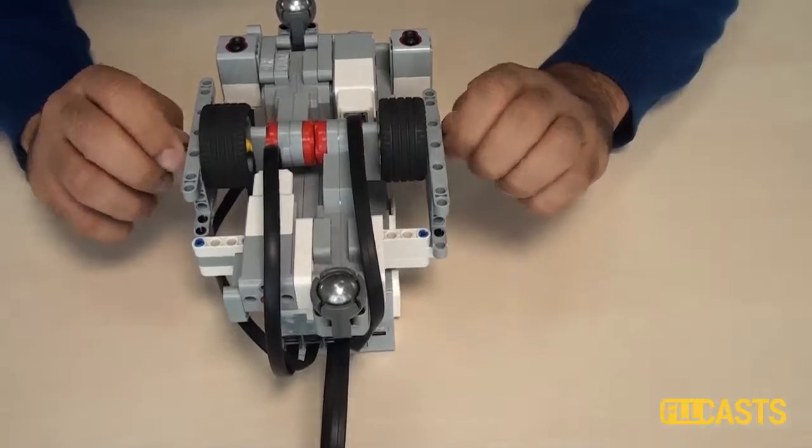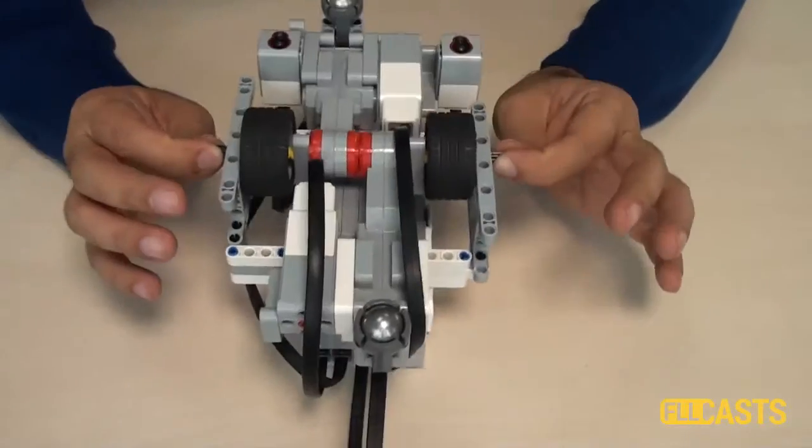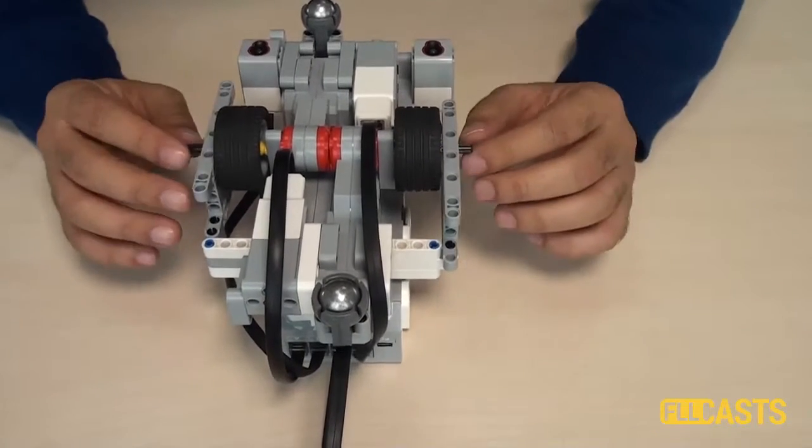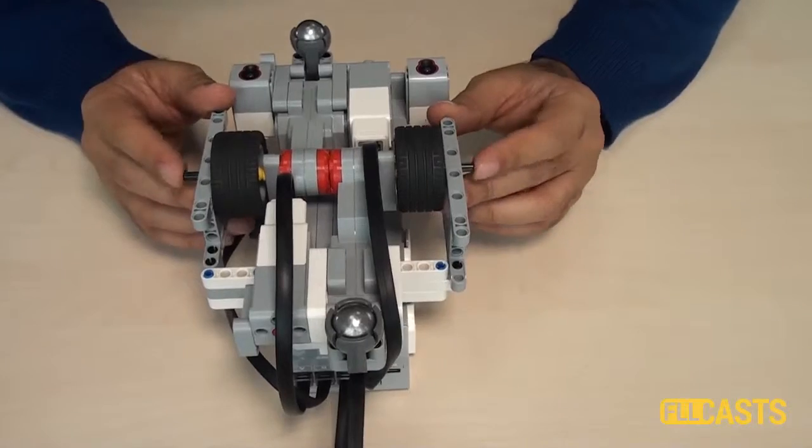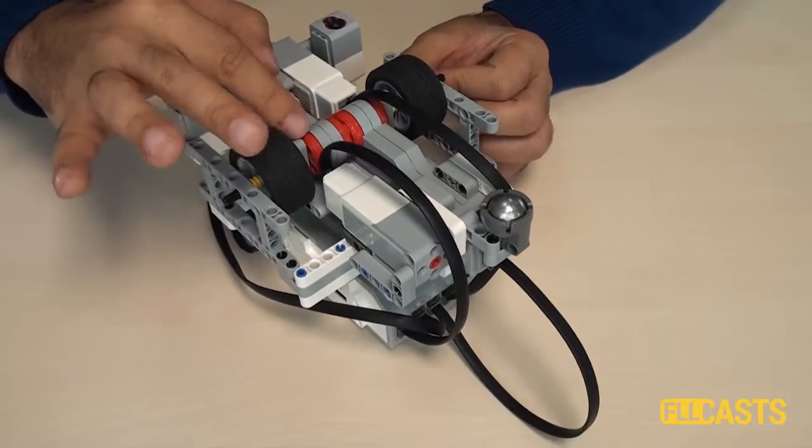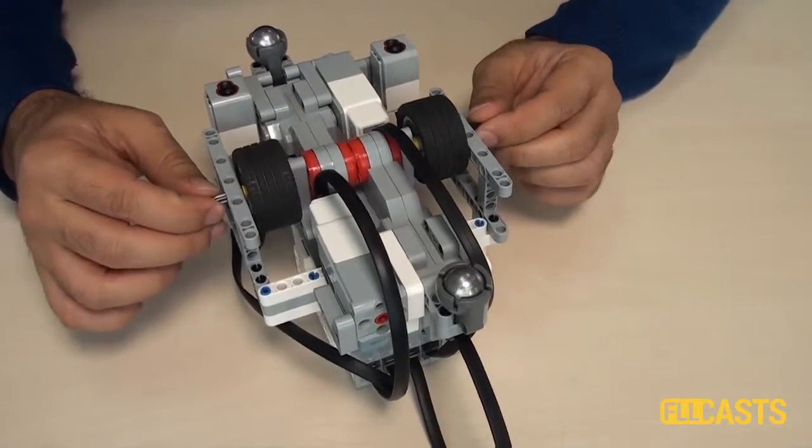The third thing about this robot is that the axles on which the tires are connected, they touch the robot in two places. They are connected on two places: first here on this frame and second on the motor. So the axles are quite stable.